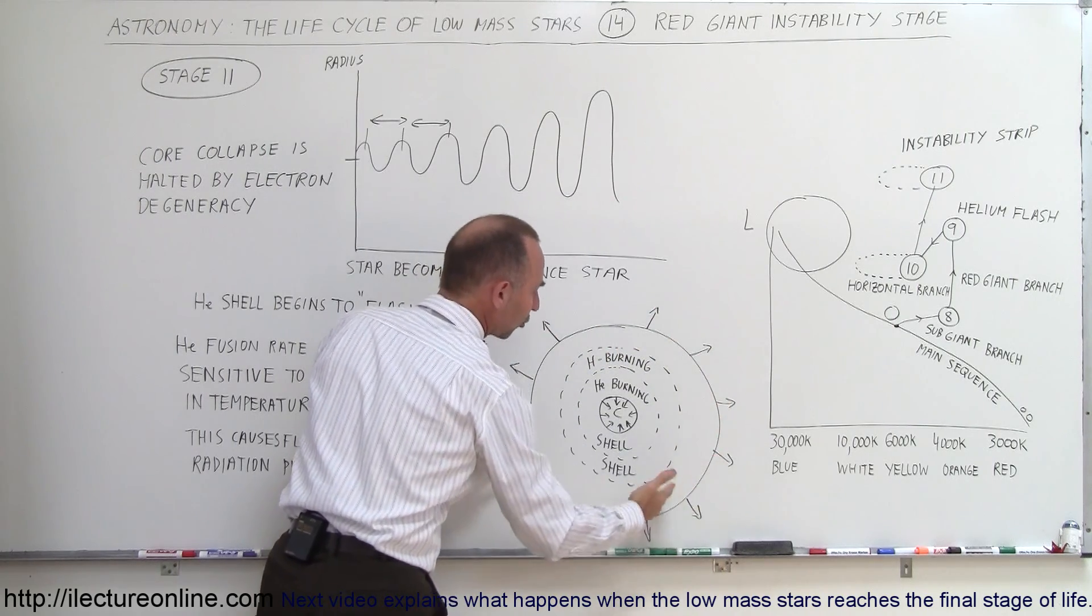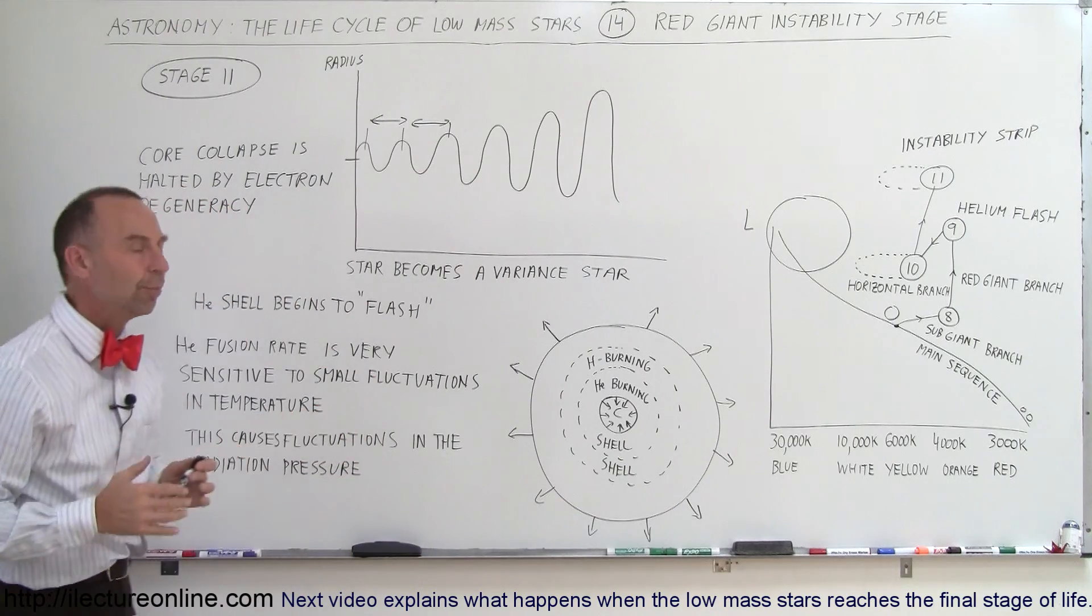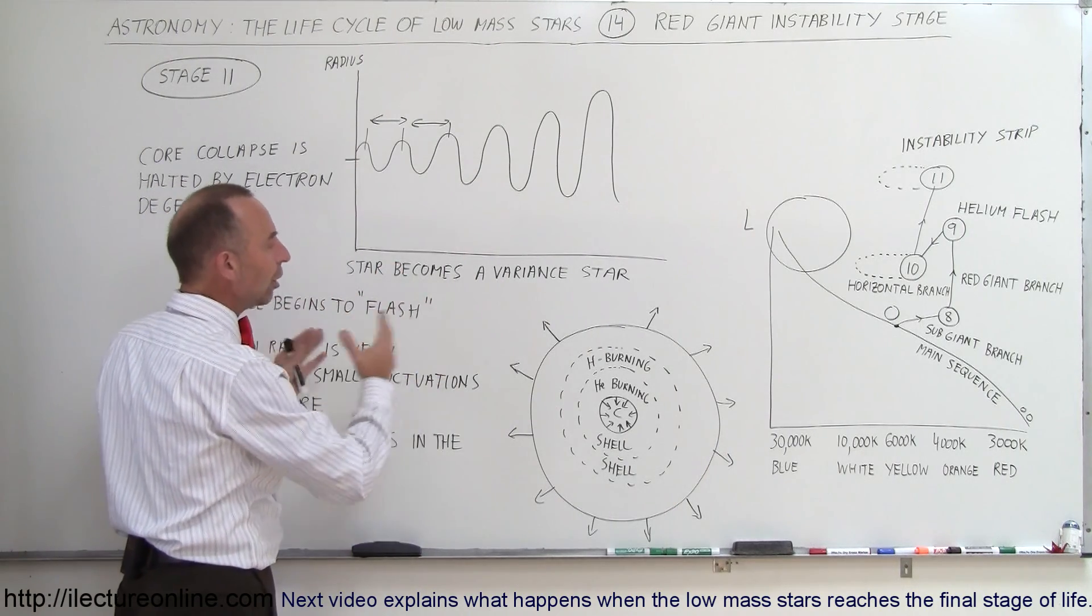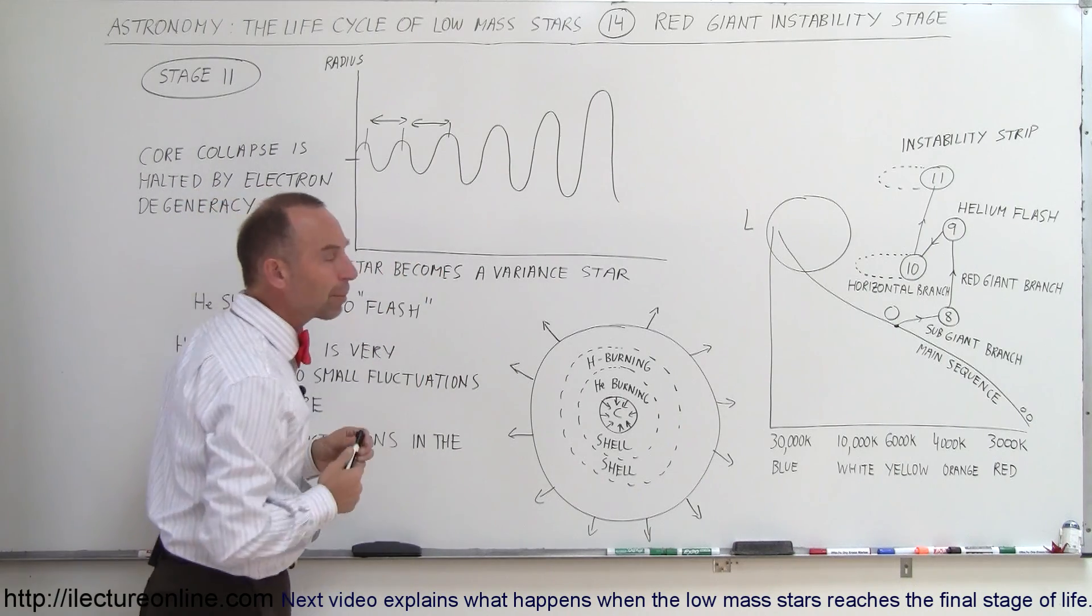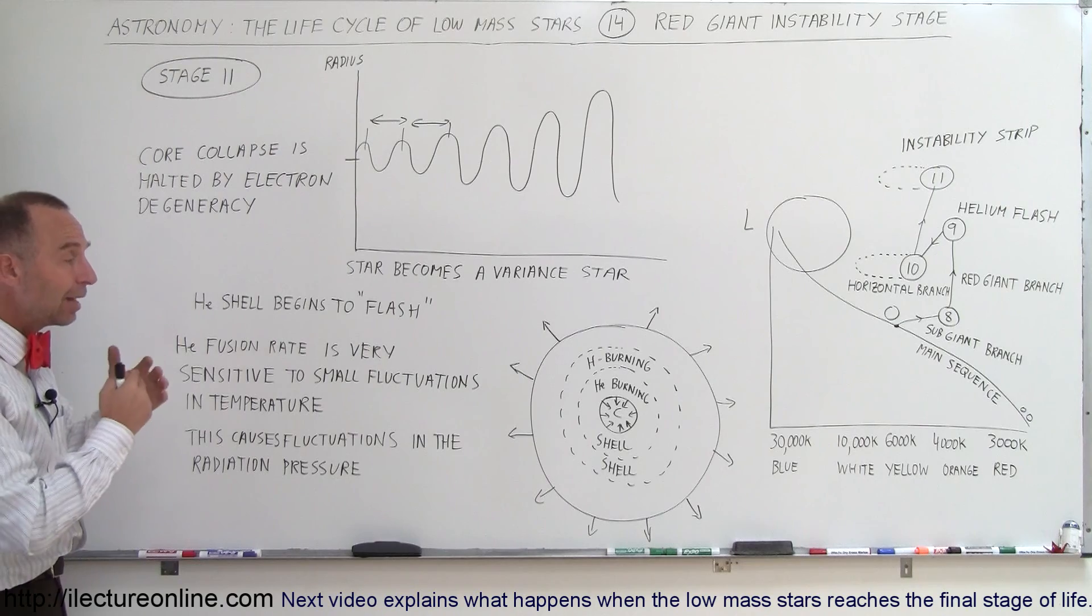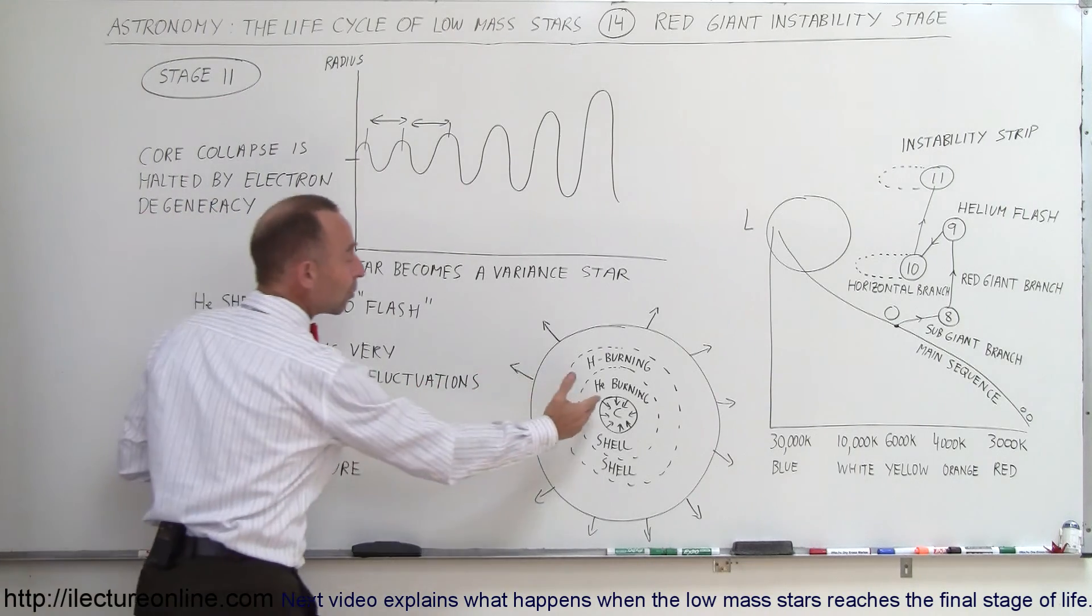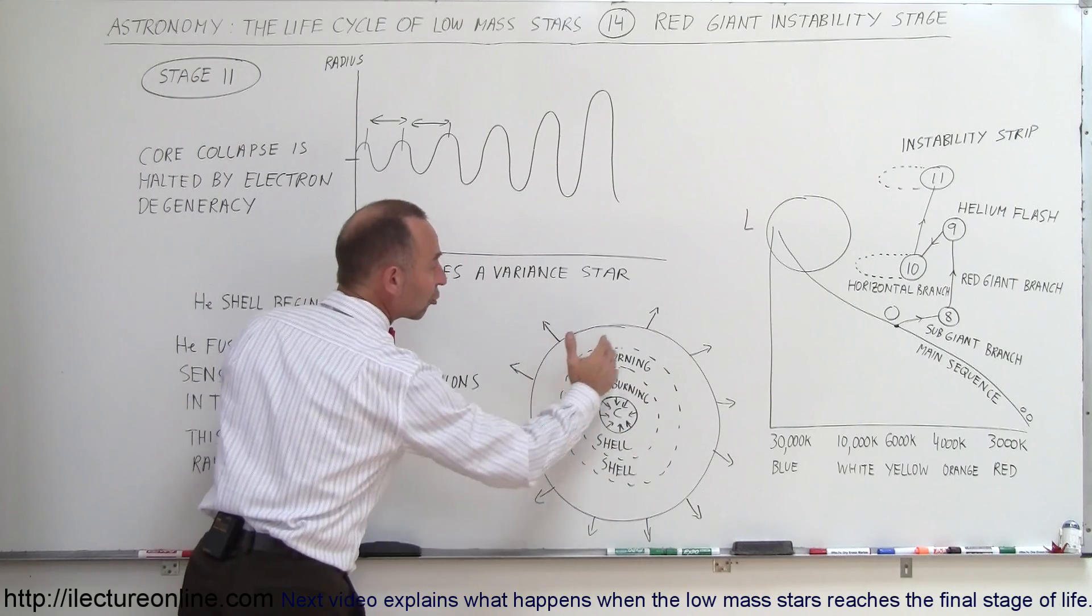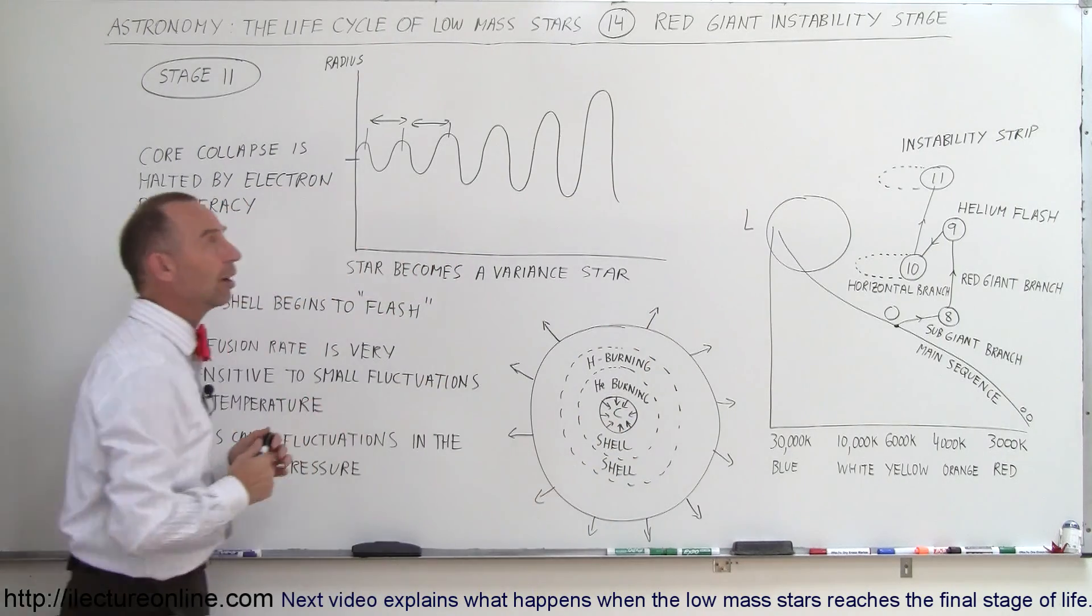Pieces of mass of star will slowly be ejected away from the star as the fluctuations continue. This process will continue over a period of millions of years, but not a very long period of time. Eventually, the vast majority of the material will have moved away from the core. You'll have the core by itself and the outer layer slowly moving away.